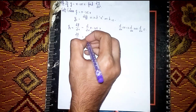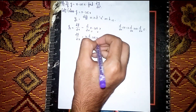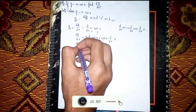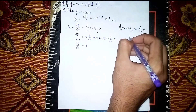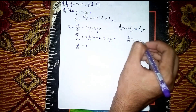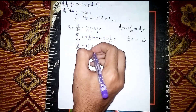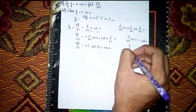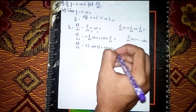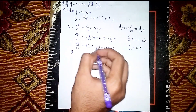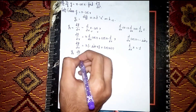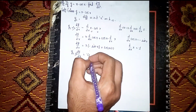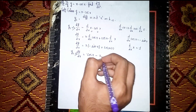Applying the formula: u is x, so it becomes x into d/dx of cos x, plus v which is cos x, into d/dx of x. Now d/dx of cos x is equal to minus sin x, and d/dx of x is equal to 1. So y1, our first derivative, is equal to cos x minus x into sin x.